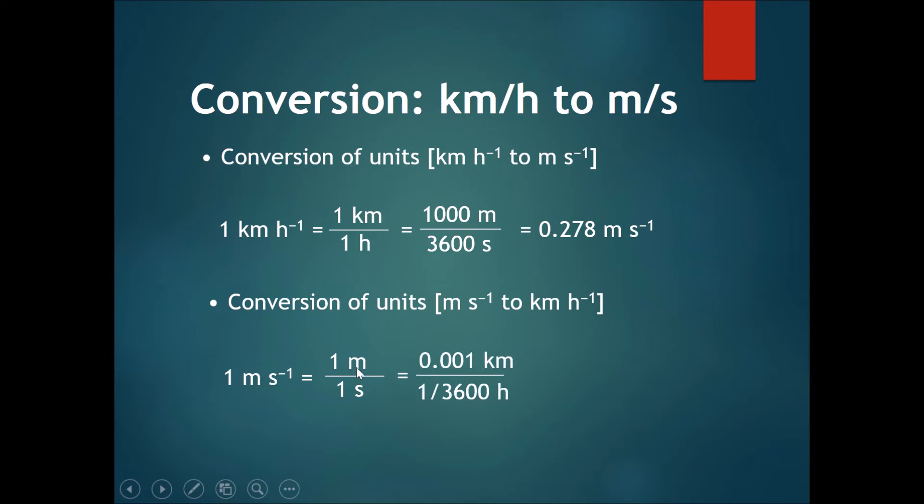One meter equals 0.001 km, one second equals one over 3600 hours. Once we finish this conversion we will get 3.6 km per hour. So one meter per second equals 3.6 km per hour.